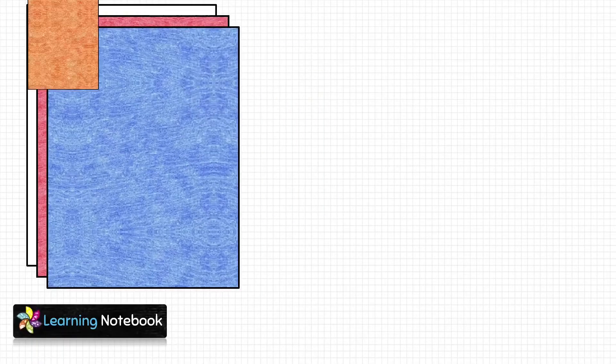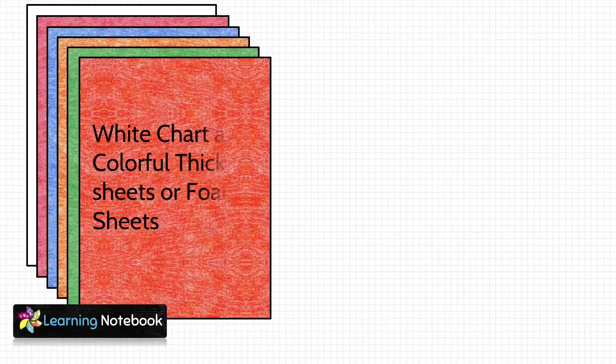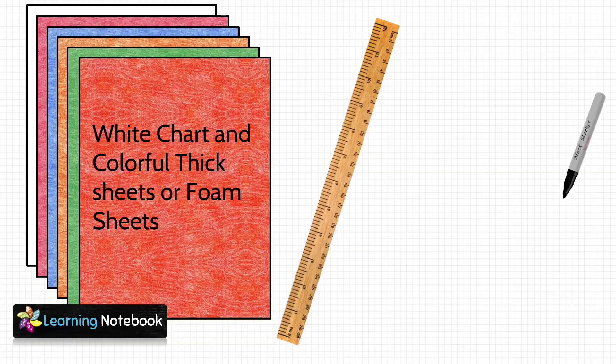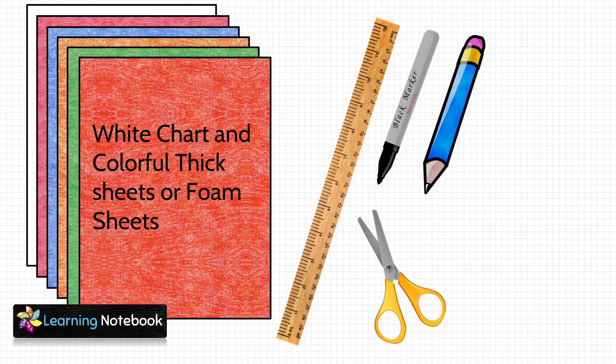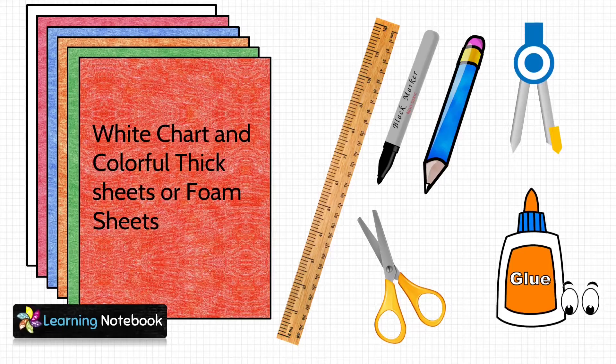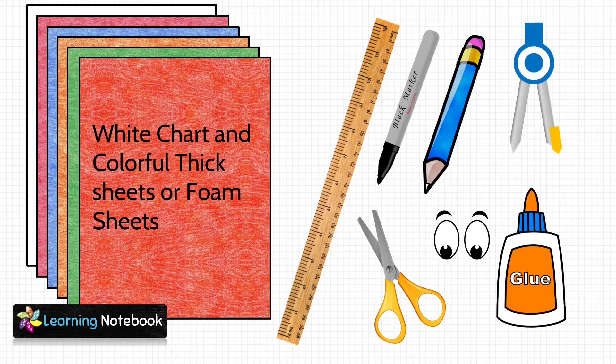For this activity we need one white chart and some colorful thick sheets, a ruler, a black marker pen, a pencil, a pair of scissors, compass, a glue bottle, and a pair of bubbly eyes.